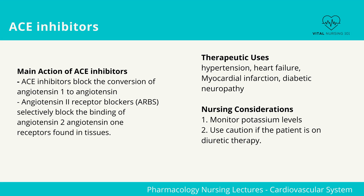There are two main actions with ACE inhibitors. ACE inhibitors block the conversion of angiotensin 1 to angiotensin 2. Angiotensin 2 receptor blockers selectively block the binding of angiotensin 2 to angiotensin 1 receptors found in tissues.